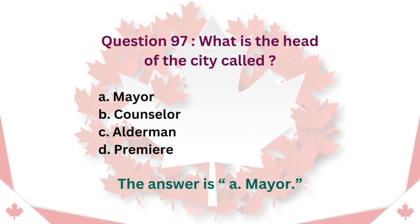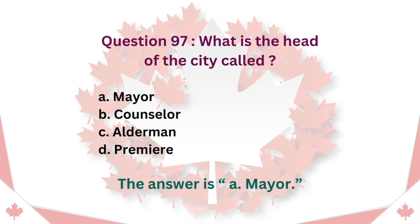Question 97: What is the head of the city called? A. Mayor. B. Councilor. C. Alderman. D. Premier. The answer is A. Mayor.